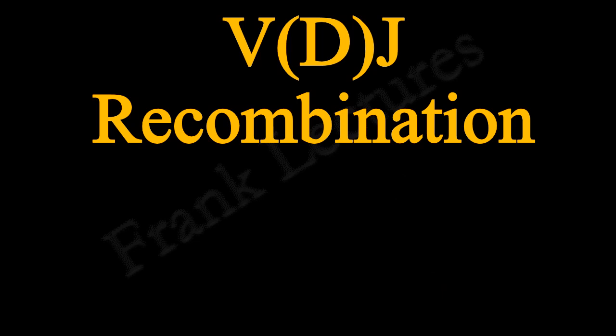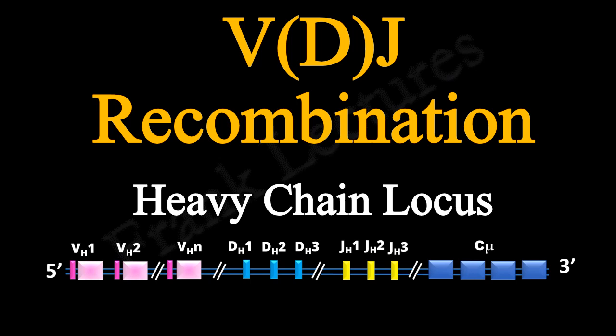In the last video lecture we saw how VDJ recombination occurs in light chain locus. Let's now understand how VDJ recombination occurs in the heavy chain locus.